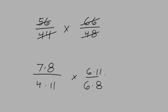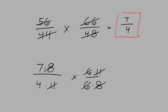Then we can cancel out any common factors that are in both the top and bottom numbers. We can cancel out an 8, we can cancel out an 11, and we can cancel out a 6. What we have left over is 7 over 4, which is our final answer.